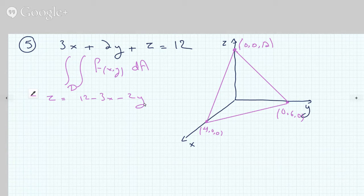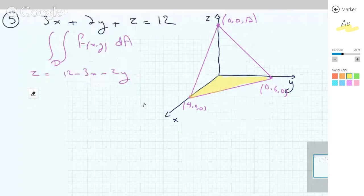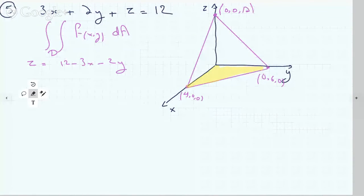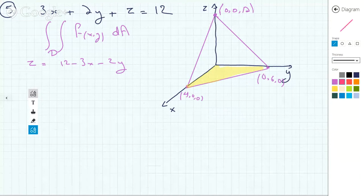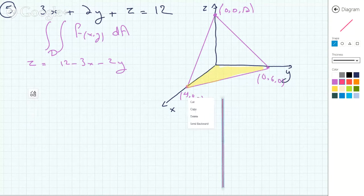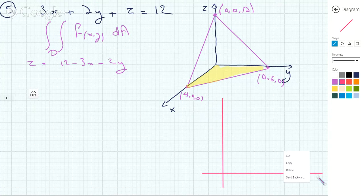Region D is the projection of the surface onto the xy-plane. This projection gives a triangle in the xy-plane, which becomes our region D for integration.